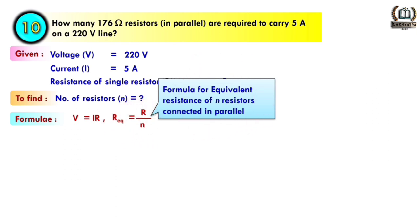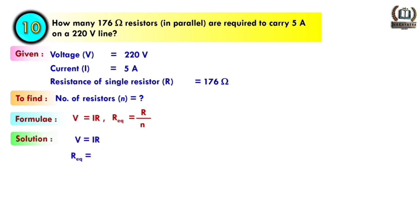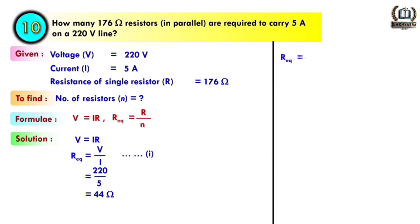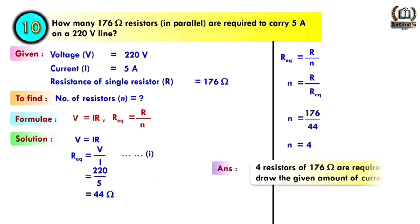Solving: R-equivalent = V/I = 220/5 = 44 ohm. Since R-equivalent = R/N, rearranging gives N = R / R-equivalent = 176/44 = 4. Therefore 4 resistors of 176 ohm connected in parallel are required to draw the given amount of current.